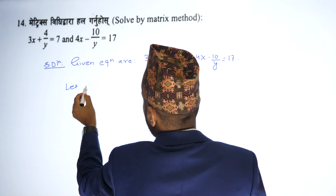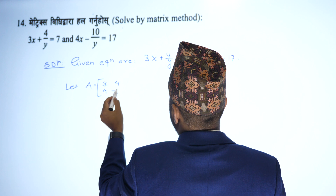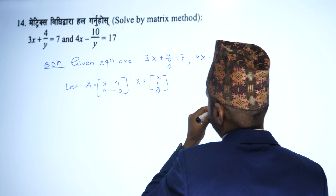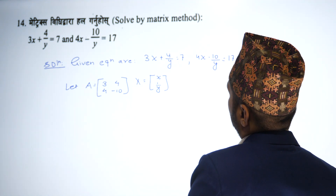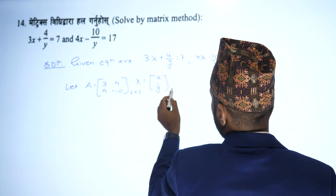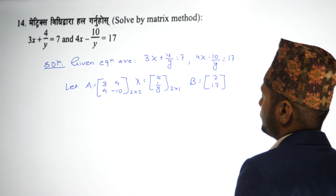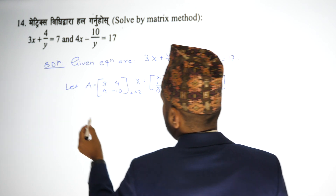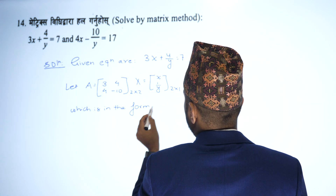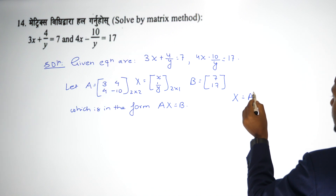Let A equals the 2x2 matrix [3, 4; 4, -10], X equals the 2x1 matrix [x; y], and B equals the 2x1 matrix [7; 17]. This is in the form AX = B, so the solution is X equals A inverse times B.